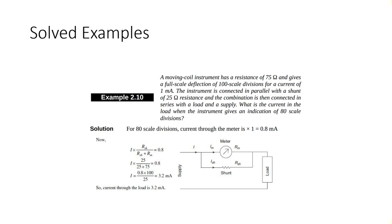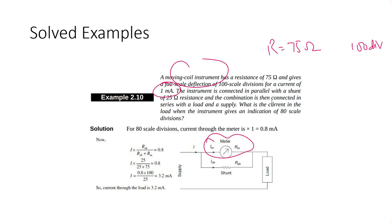In the next example, a PMMC instrument has a resistance of 75 ohm. For a full scale of 100 divisions, the maximum bearing current is 1 milliampere. The combination is connected to a series load.